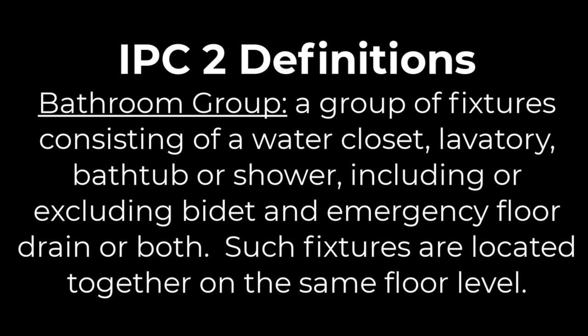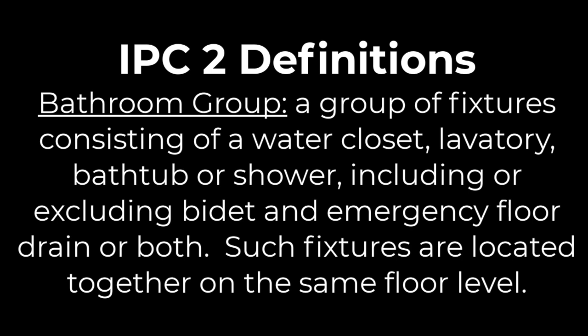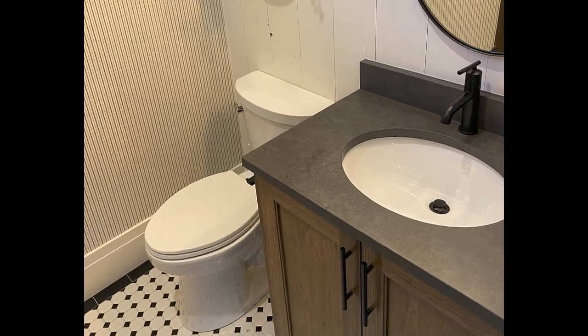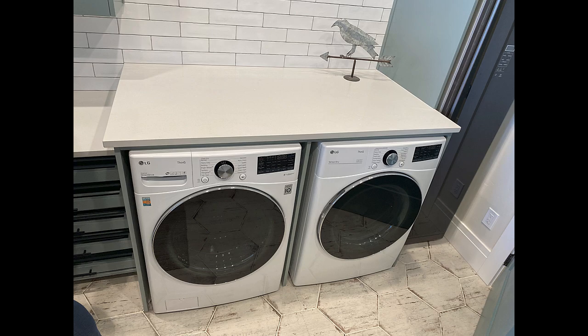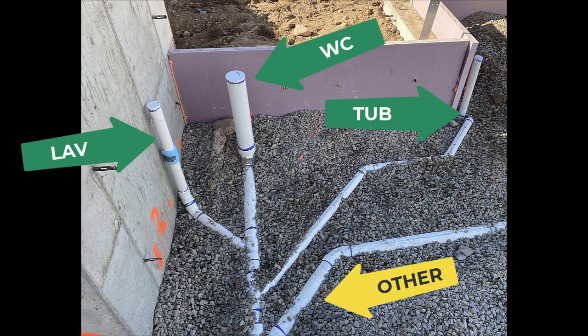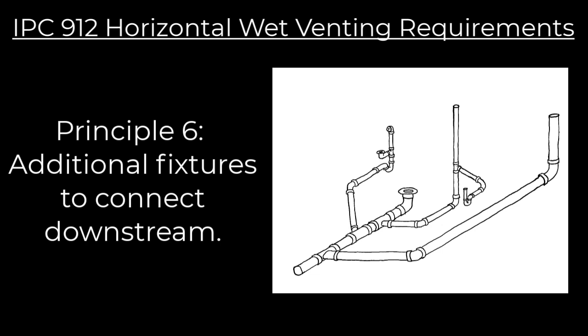From the International Plumbing Code chapter 2 definitions, a bathroom group is defined as a group of fixtures consisting of a water closet, lavatory, bathtub or shower — including or excluding bidet and emergency floor drain — located together on the same floor level. Only bathroom group fixtures connect to the horizontal wet vent, which excludes a nearby laundry sink, washer connection, kitchen sinks, or anything else like that.